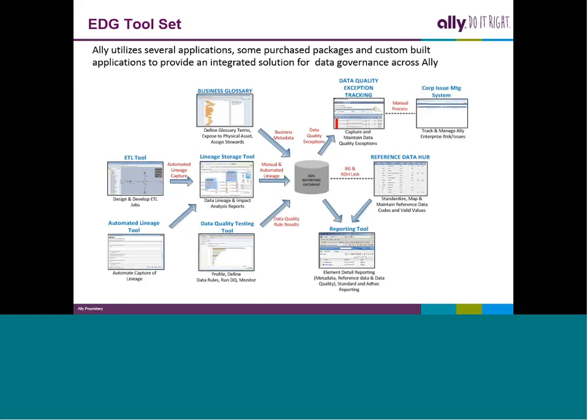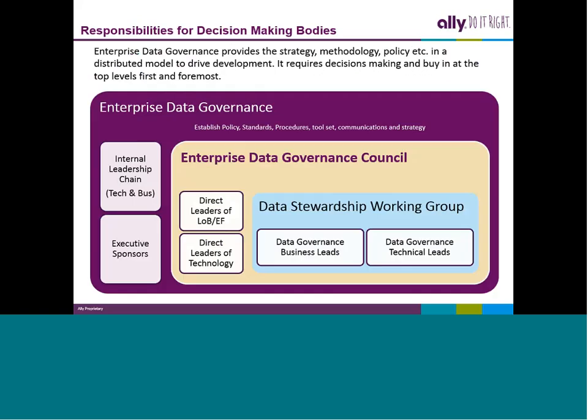Key to decision making in a data governance structure is that there are multiple pockets. To be successful, we pushed from both angles — top-down and bottom-up. We started at the top with executive sponsors and sold our strategy, policy standards, and methodology. Then we went to the bottom of our framework and worked with data owners, business leads, and tech leads to drive bottom-up. We meet in the middle at our council level. Once we got staff committed and had the top of the house committed, the council was easy to please because they were getting it from both angles.